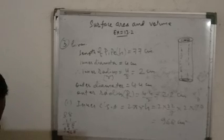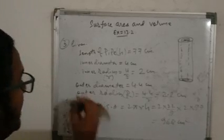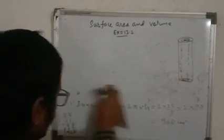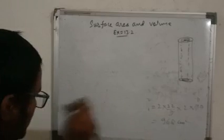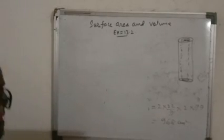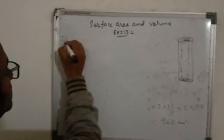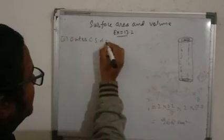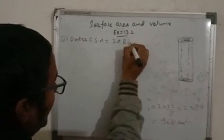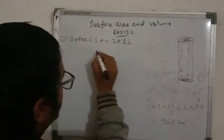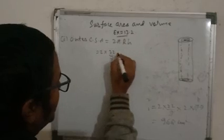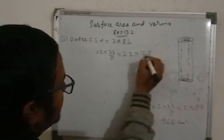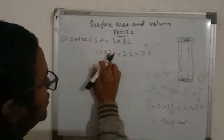Now in the second part they have asked for the outer surface area. So outer CSA = 2πRh. Put the values: 2 × (22/7) × 2.2 × 77. Again, 77 ÷ 7 = 11. So 2 × 22 × 2.2 × 11.